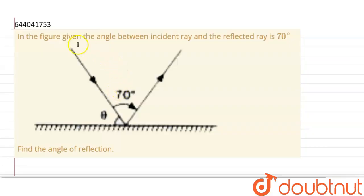Hello everyone, so the question is, in the figure given, the angle between incident ray and reflected ray is 70 degrees. Find angle of reflection.